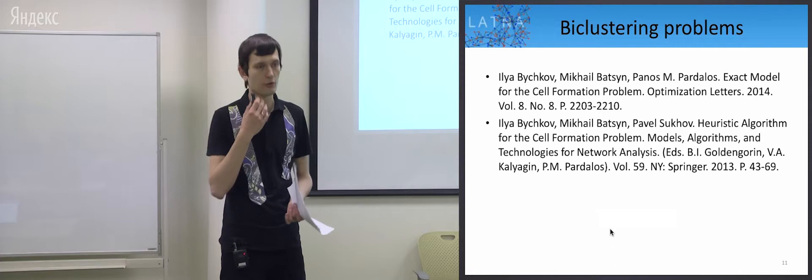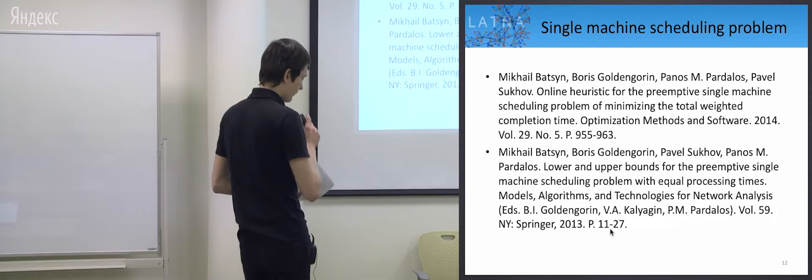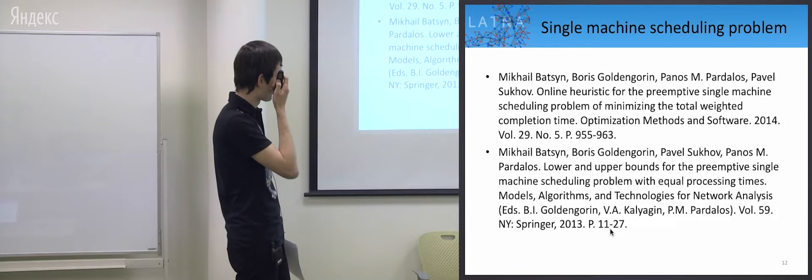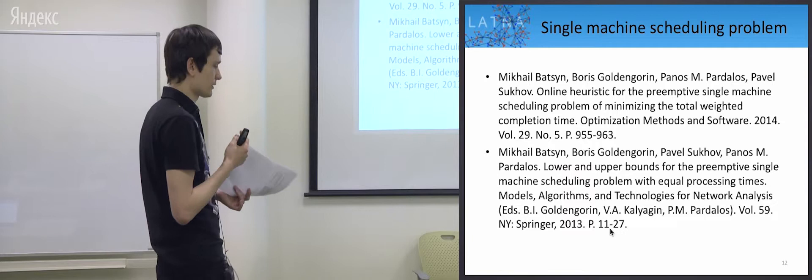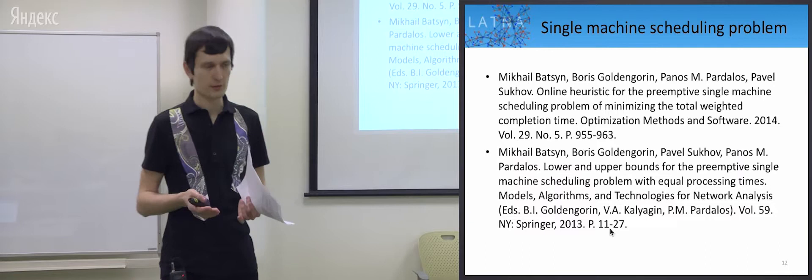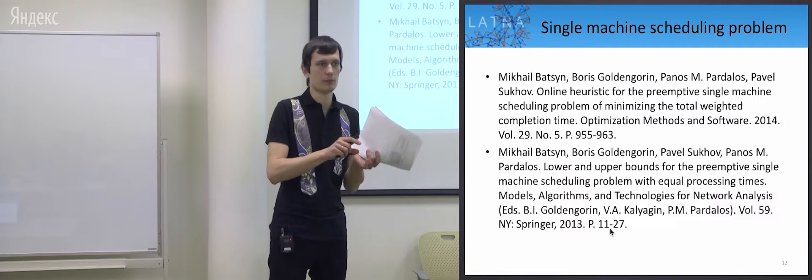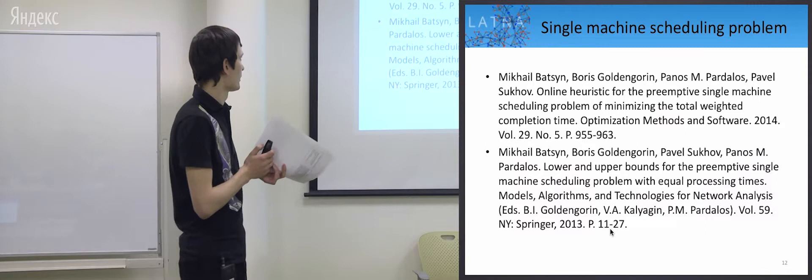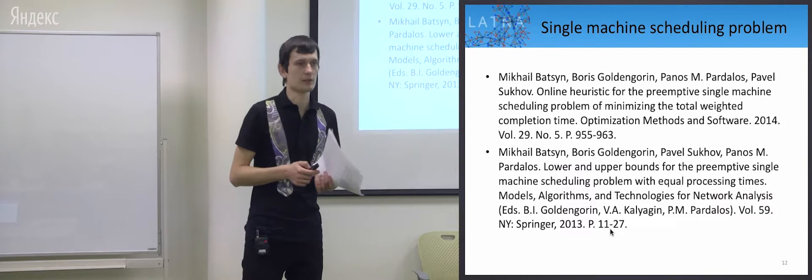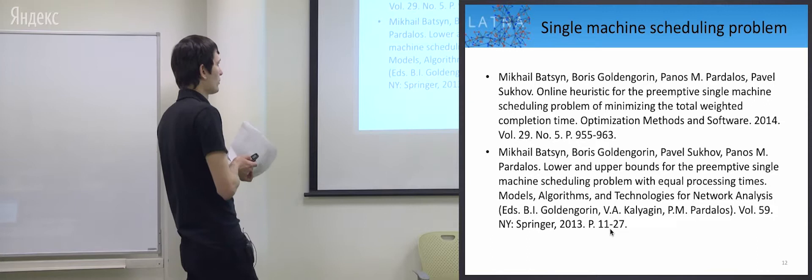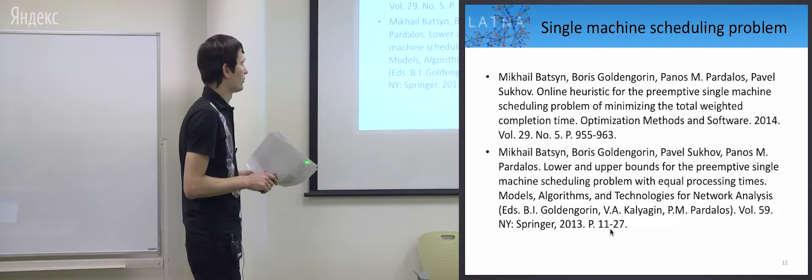Next is the single machine scheduling problem we considered: the preemptive single machine scheduling problem of minimizing total weighted completion time. You have jobs and one processor. Each job has its weight, and you want to minimize the total weighted completion time. You also have preemptions, which means a job can be interrupted in favor of another job, and you have arbitrary release dates and processing times. We have developed fast heuristics for it, and also some lower and upper bounds which can be further used in exact search.